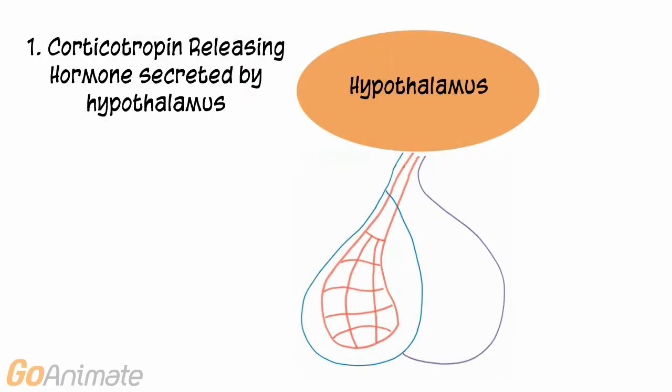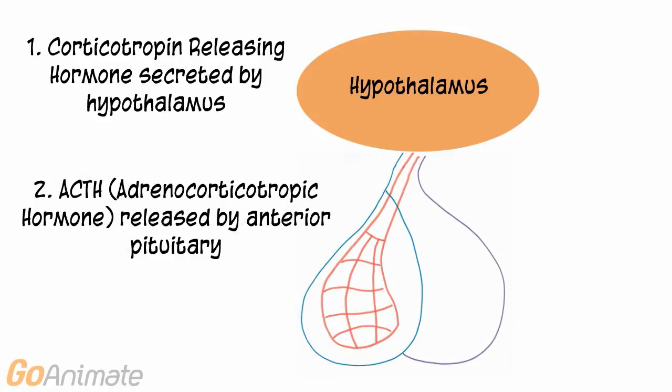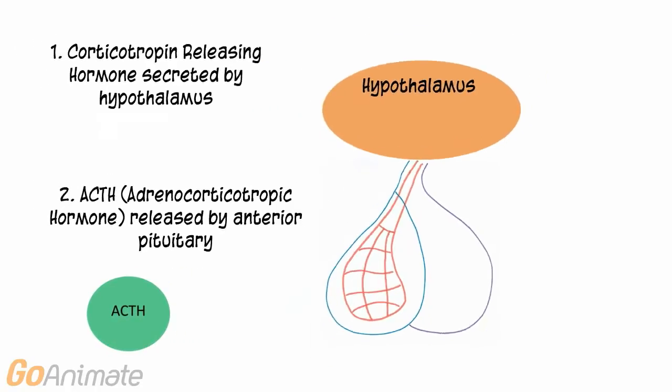In the case of ACTH, the hypothalamus first releases corticotropin releasing hormone or CRH. CRH travels to the anterior pituitary gland by way of the blood vessel network. The anterior pituitary responds by secreting ACTH.